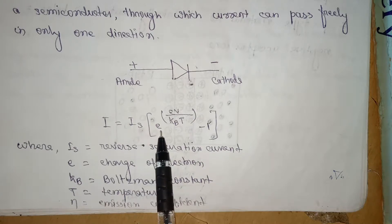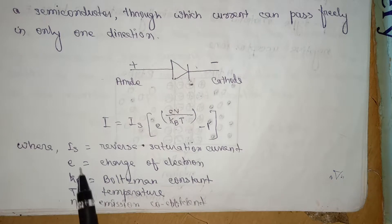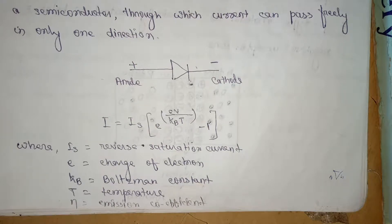Where Is is the reverse saturation current, e is the charge of electron, kV is the voltage constant, T is the temperature, and n is the emission coefficient.